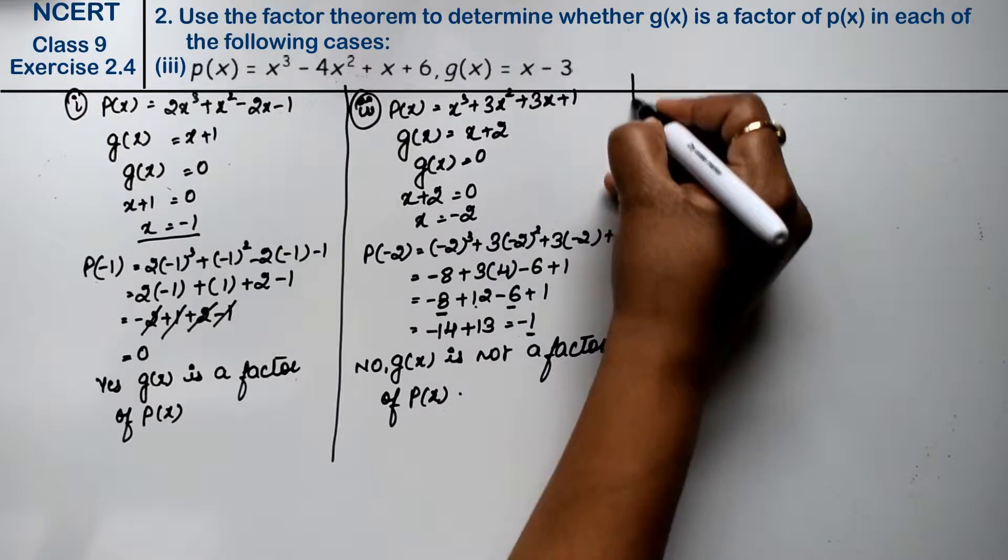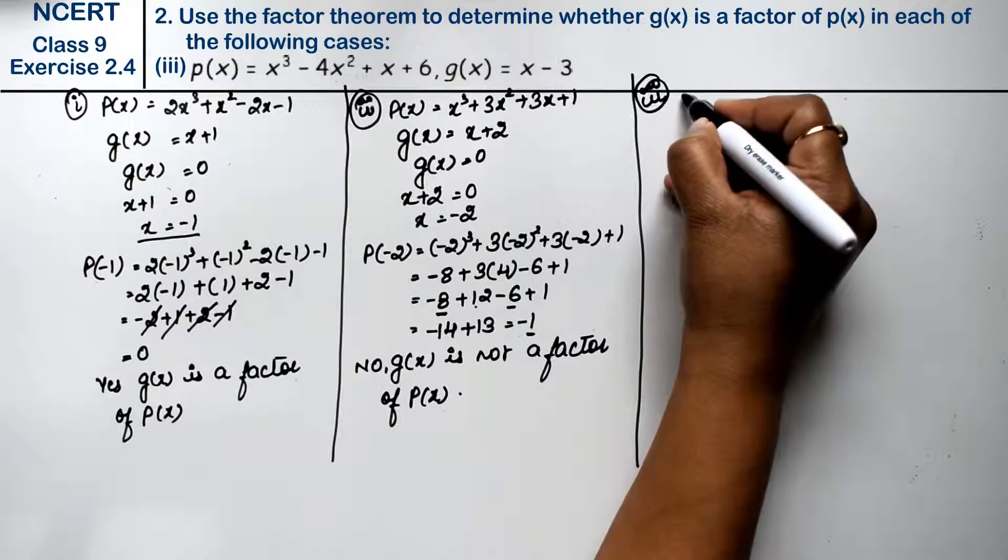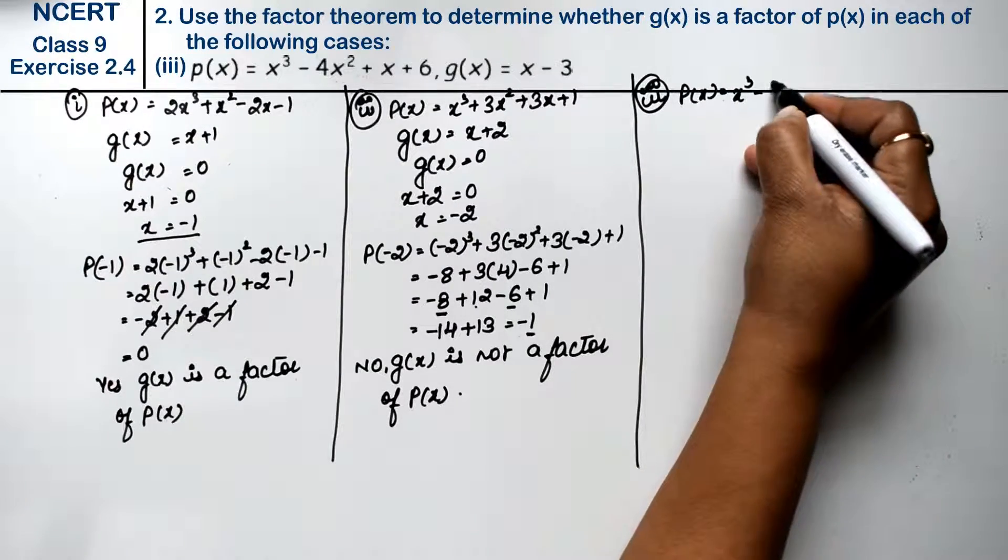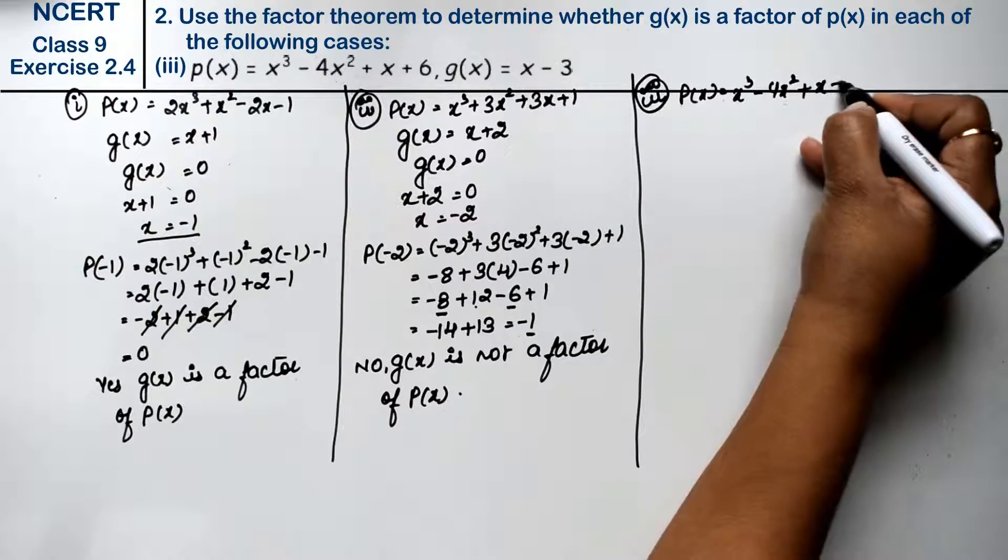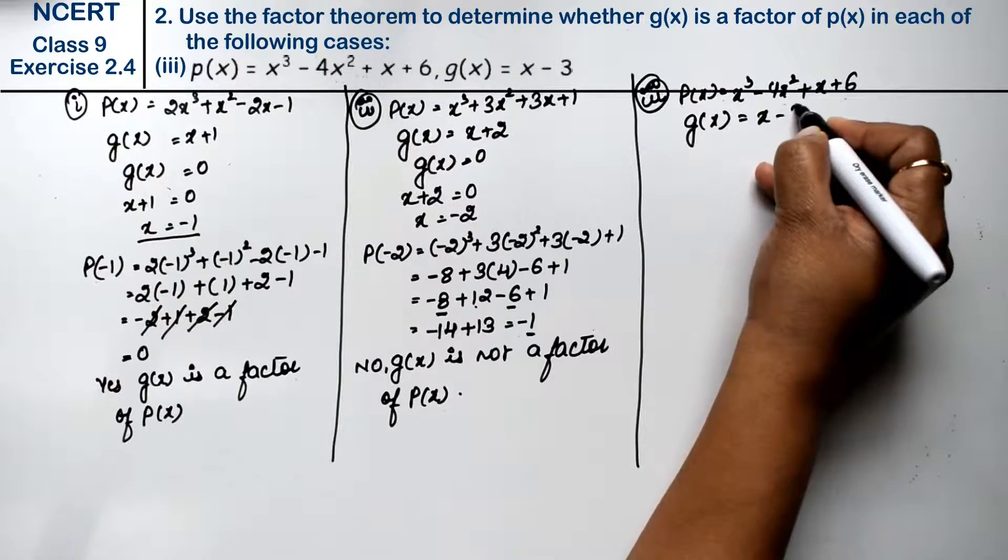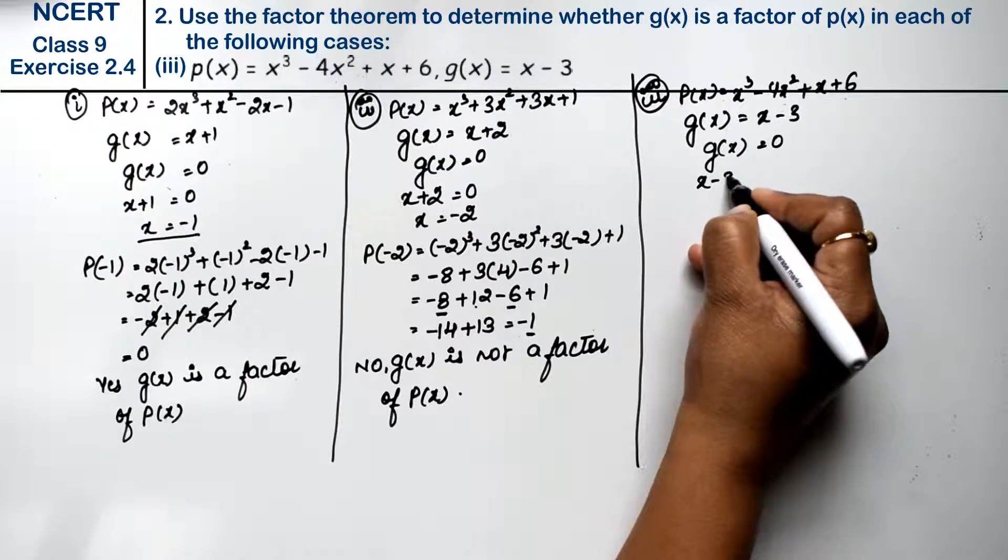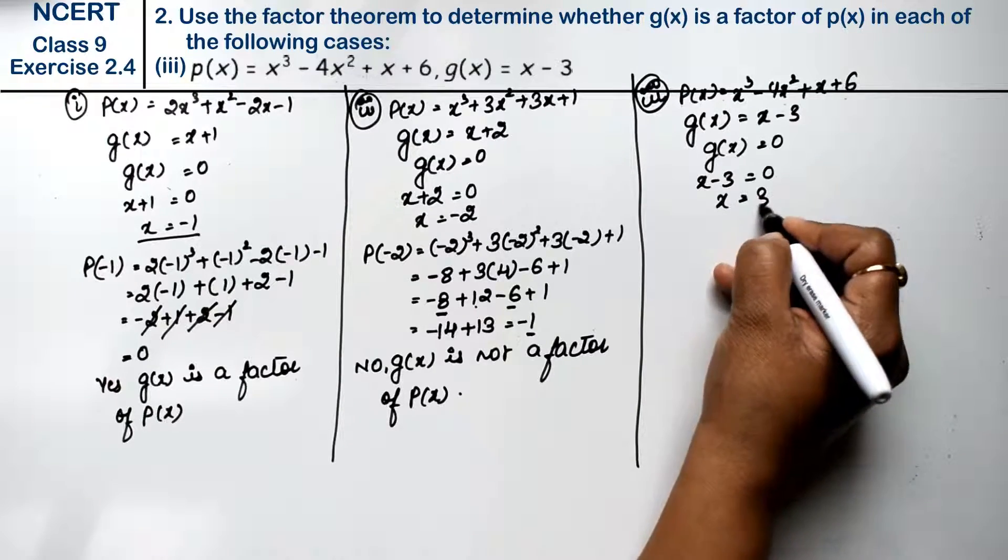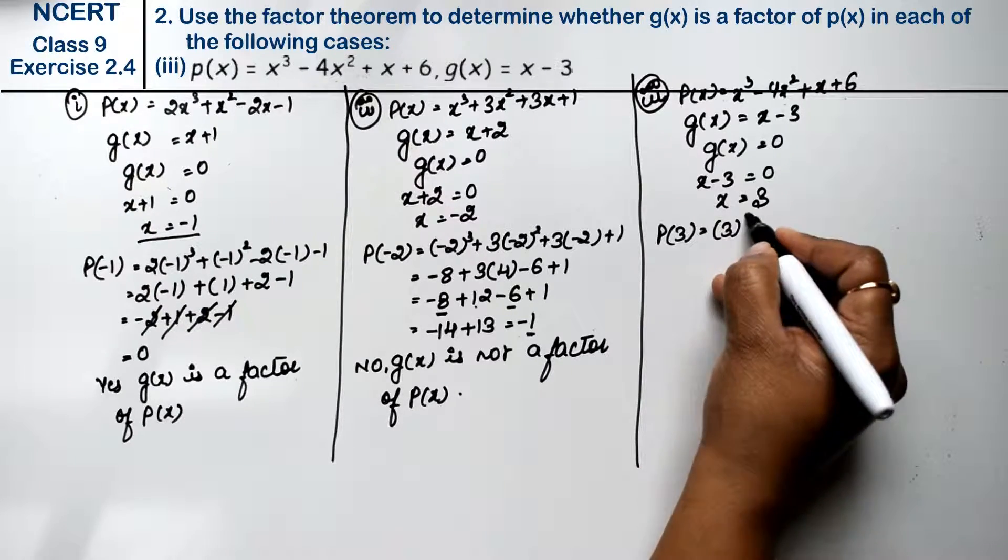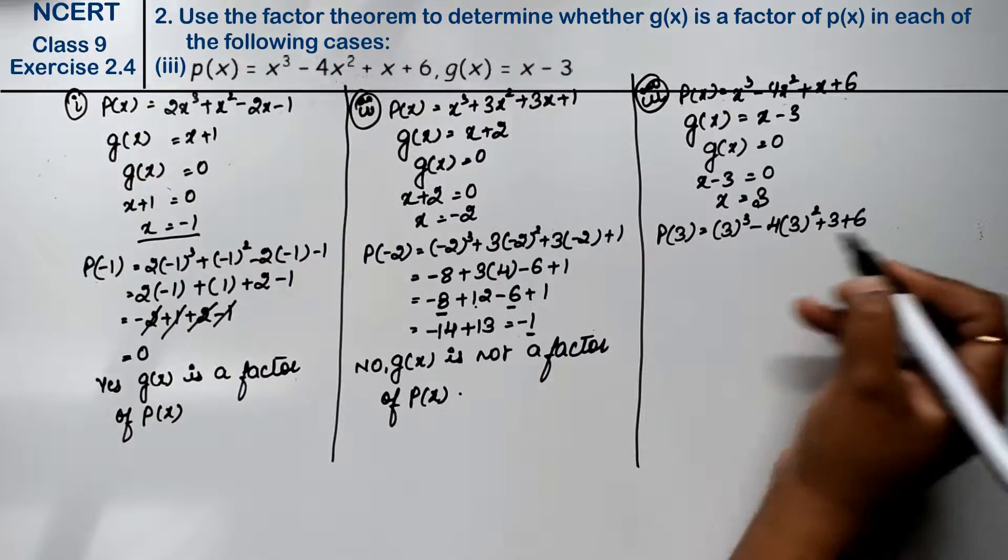Let's do third part. Third part: p(x) = x³ - 4x² + x + 6, and g(x) = x - 3. Now we have g(x) = 0, so x - 3 = 0, so x value is positive 3. So we have x value of 3.